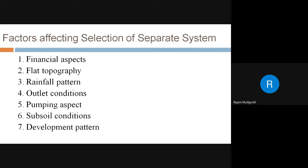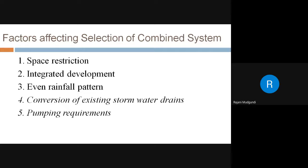If rainfall distribution is uniform, the suitable type of sewerage system is the separate system. Regarding outlet condition — if storm water can be disposed of in a nearby stream, and the total travel distance for storm water to a particular outlet is short, then the separate system holds good. Pumping aspect, subsoil condition, and the development pattern of the city also matter; if a completely developed area exists, the separate system is ideal.